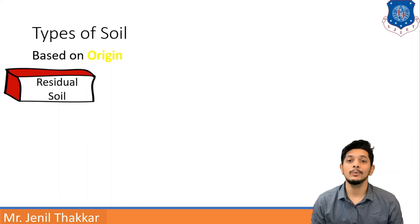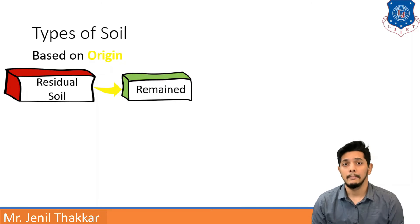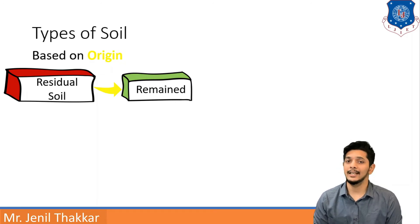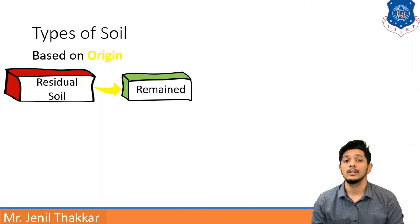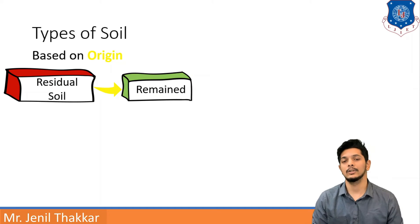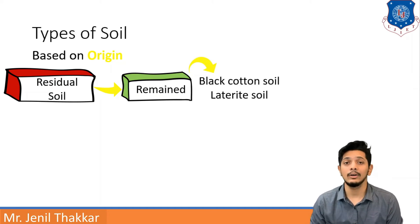Residual soil simply means 'remained soil' — the soil that remains after transportation, sedimentation, and deposition. Examples of residual soil are black cotton soil and laterite soil. Pictures of these soils will be seen shortly.